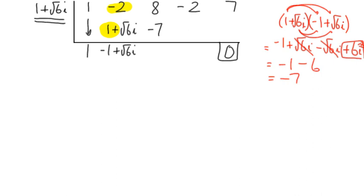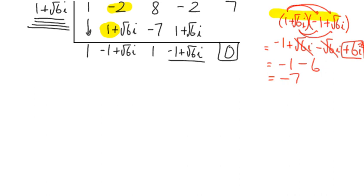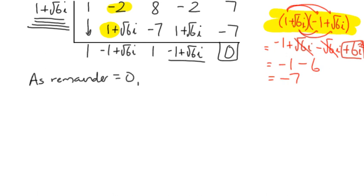Putting −7 in, we add 8, and −7 + 8 gives 1. Multiplying 1 by 1 + √6i gives 1 + √6i, then subtracting 2 from the real part: −1 + √6i again. We need to multiply (−1 + √6i)(1 + √6i) — which we already calculated as −7. Adding −7 and 7 gives 0 as the remainder. So we can state that since the remainder equals zero, 1 + √6i is a root.